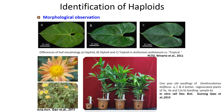Coming to the techniques to identify haploids. The first is morphological observations or morphological markers, differentiated with the help of a color chart. The haploid in picture A is having light green color compared to other ploidy levels, meaning the ploidy level can be easily differentiated with color formation in flower, leaf or any part of the plant.